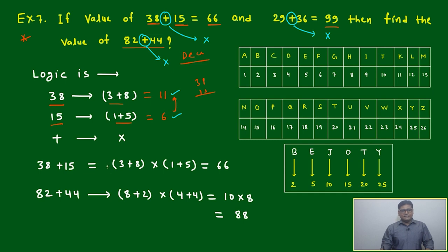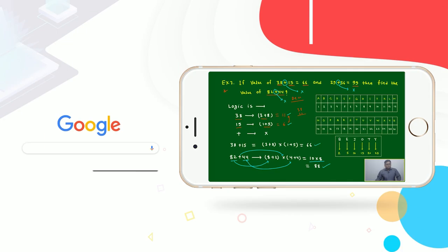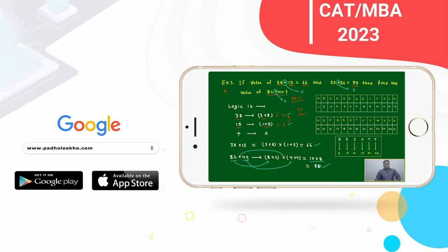Similar way, 82 plus 44. Convert this addition to multiplication: 8 plus 2 is 10, and 4 plus 4 is 8. So 10 into 8 will be 80, not 88. Just a writing mistake. 8 plus 2 is 10, 4 plus 4 is 8, 10 into 8 is 80.